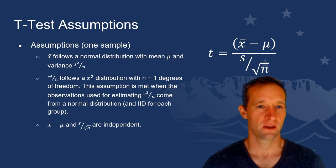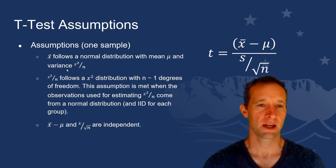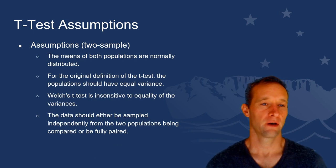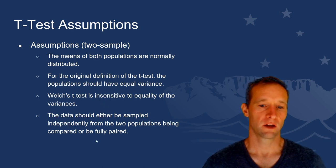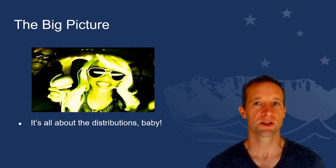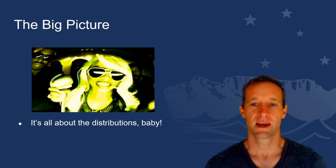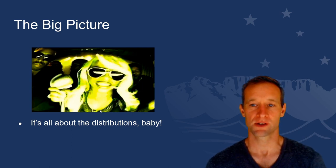In the t-test, the assumptions are that the sample mean follows a normal distribution with mean mu and variance s squared over n; that s squared over n follows a chi-squared distribution with n minus 1 degrees of freedom; and that x-bar minus mu and s over square root n are independent of one another. The big picture takeaway is that it's the distributions that tie all of this together. Modeling ultimately is estimating some data-generating distribution and then making inferences based on the corresponding parameters of those distributions.